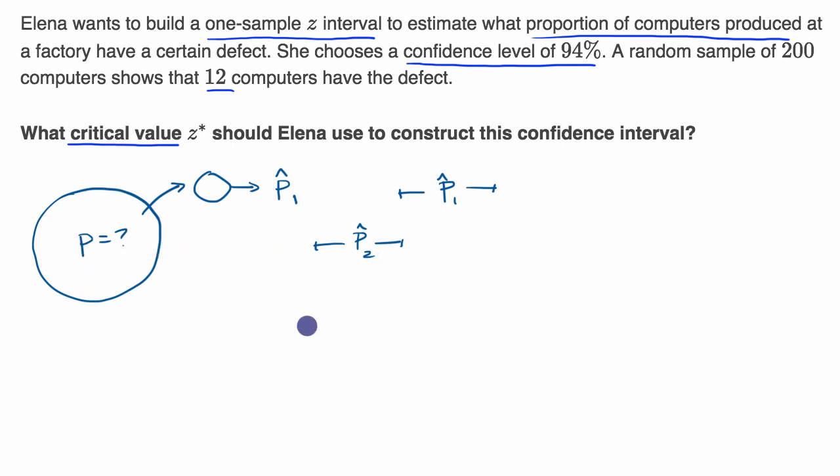The way that we do this is we take the statistic, even if we're not talking about a proportion but trying to estimate the population mean. We take our statistic and then we go plus or minus around that statistic.